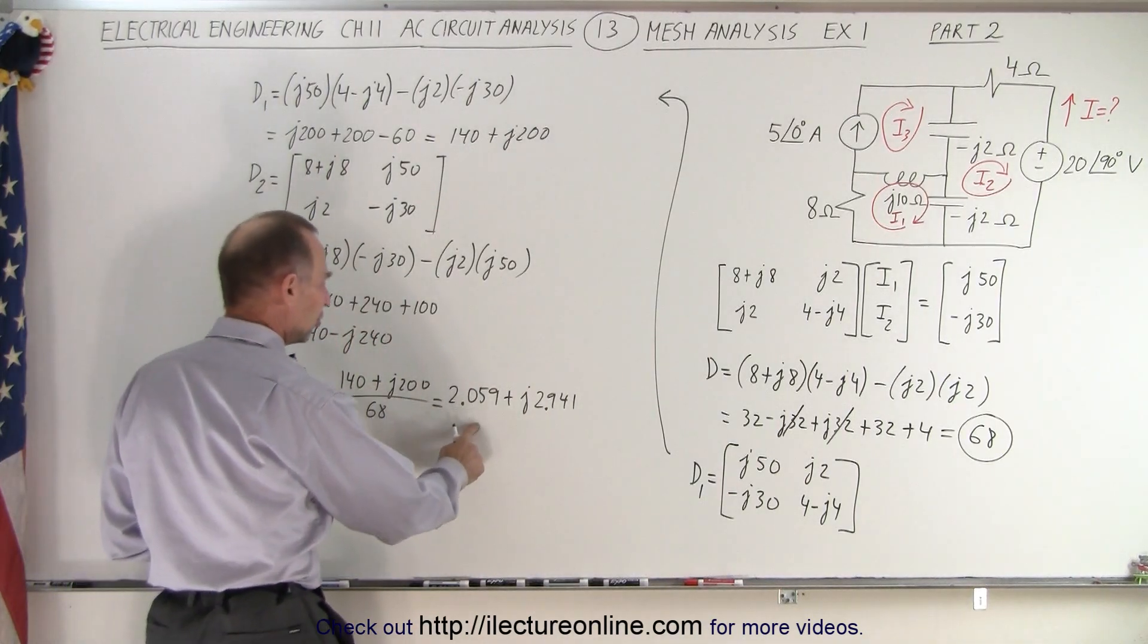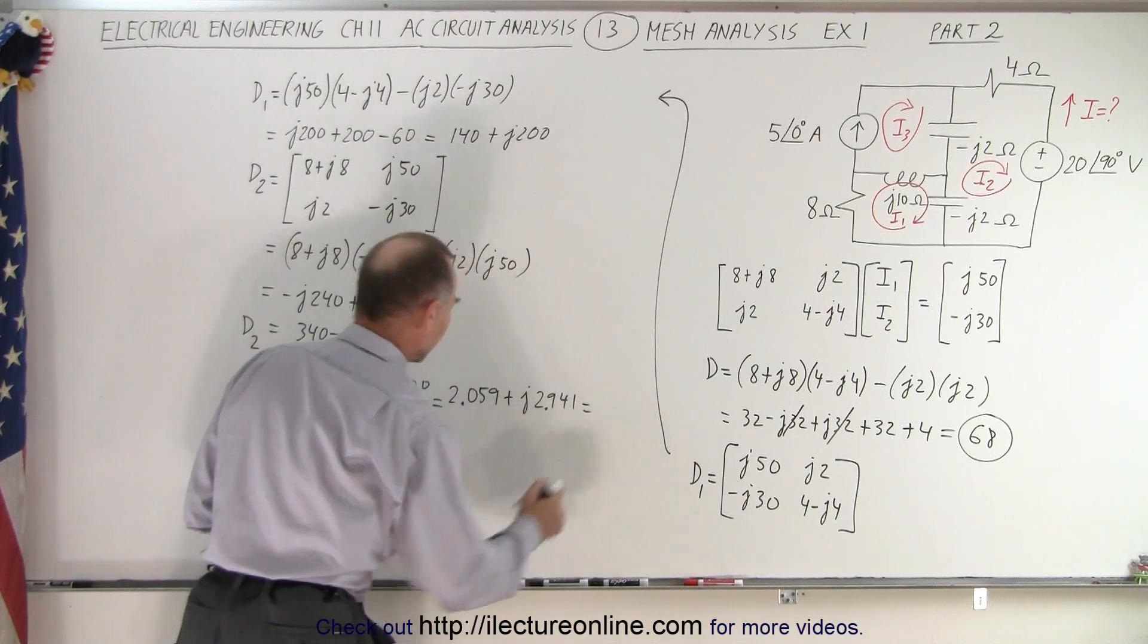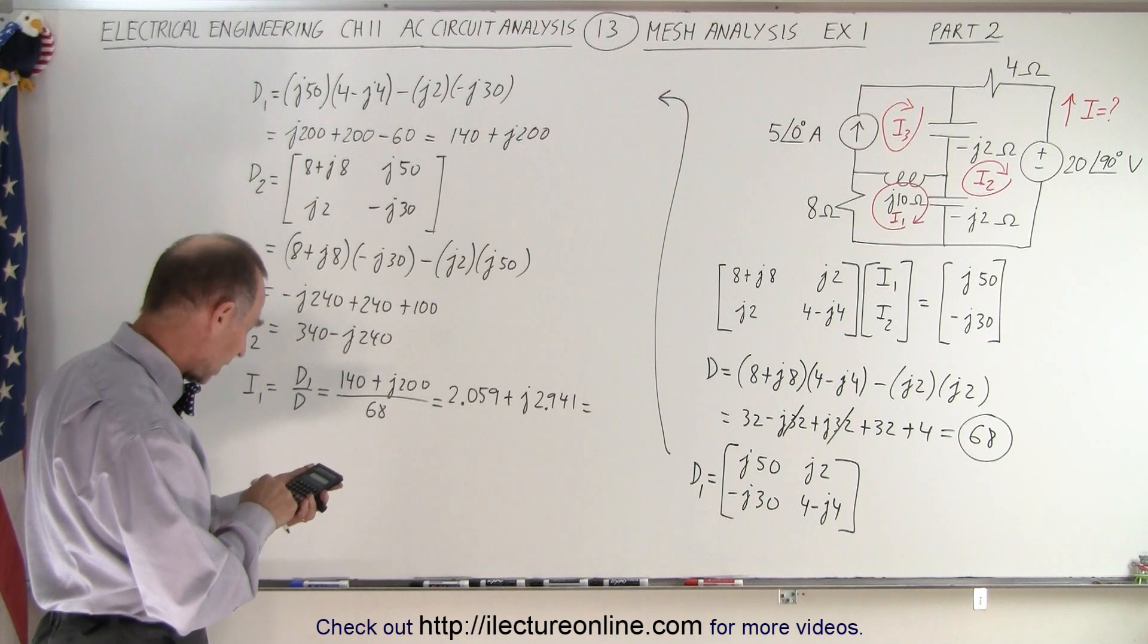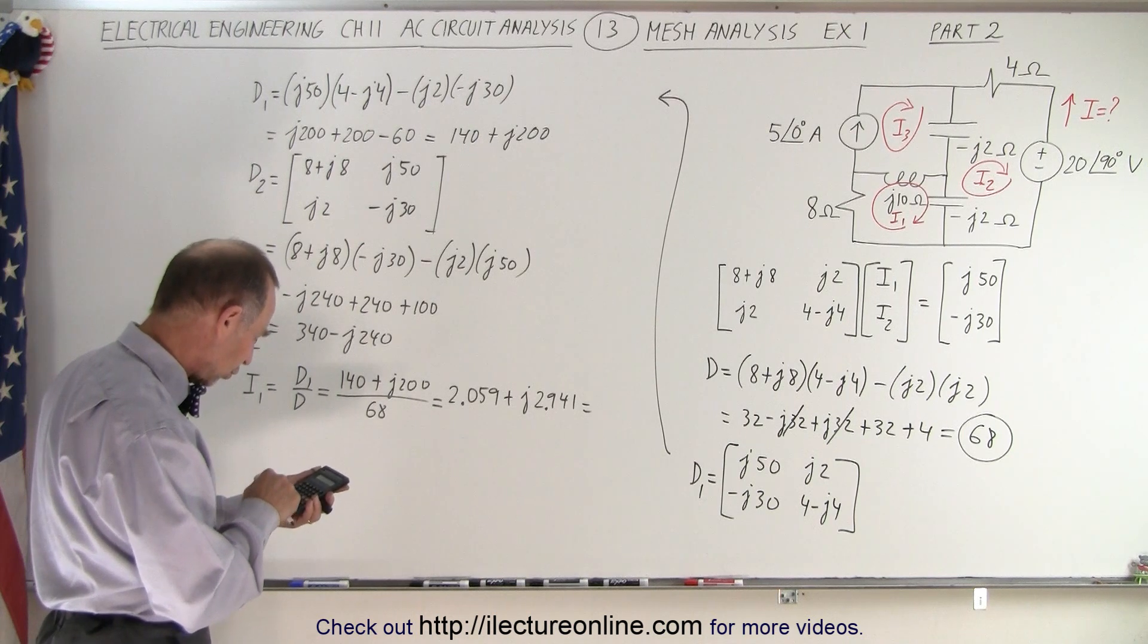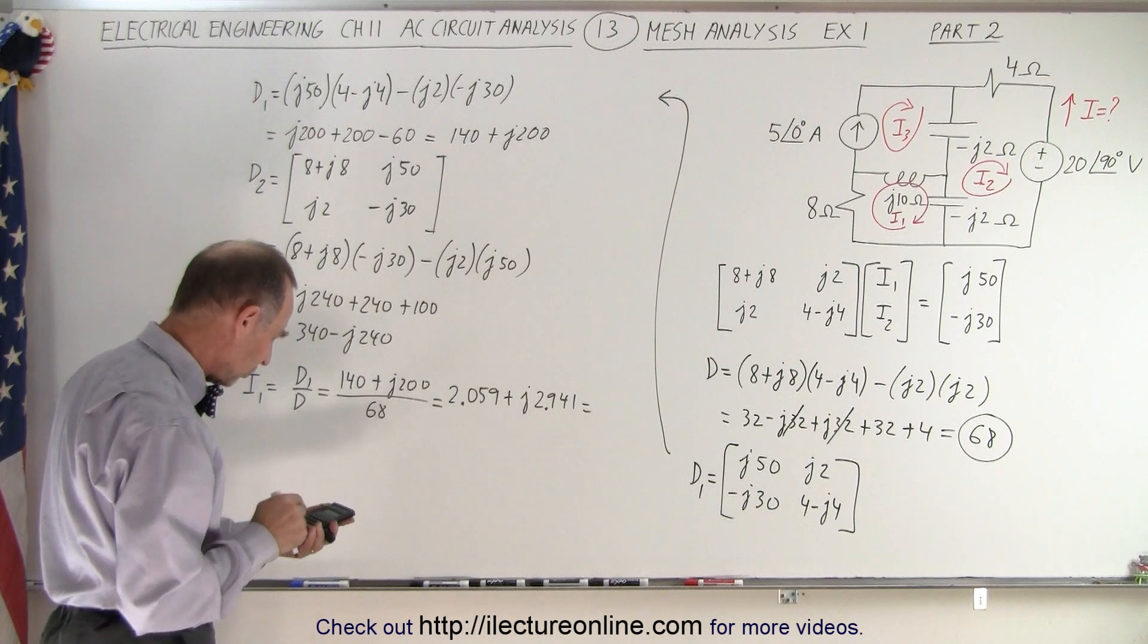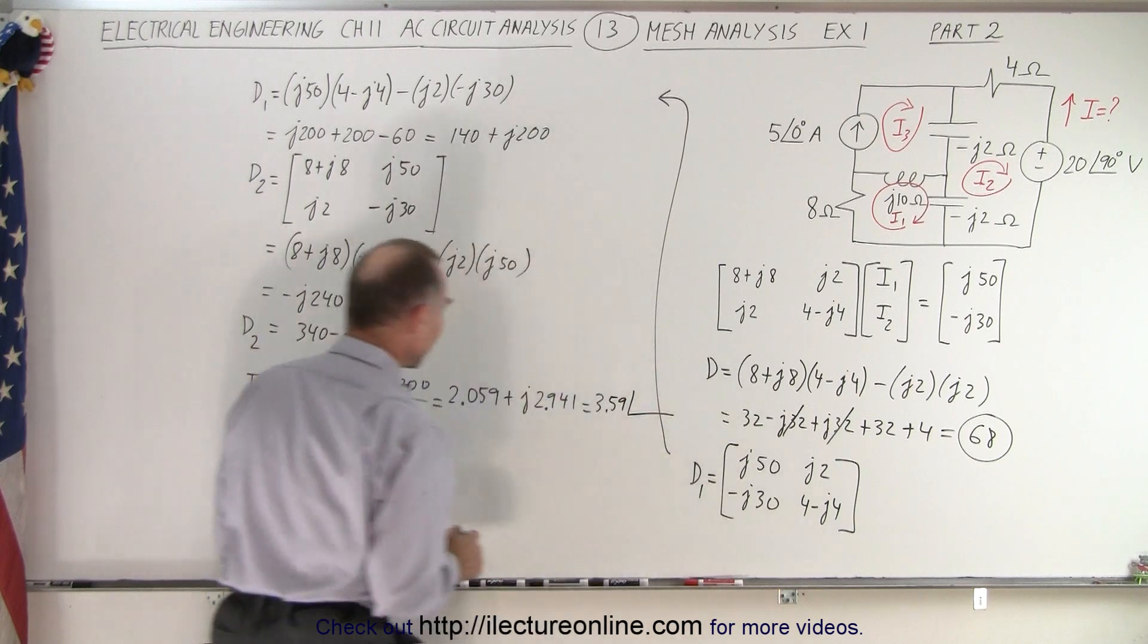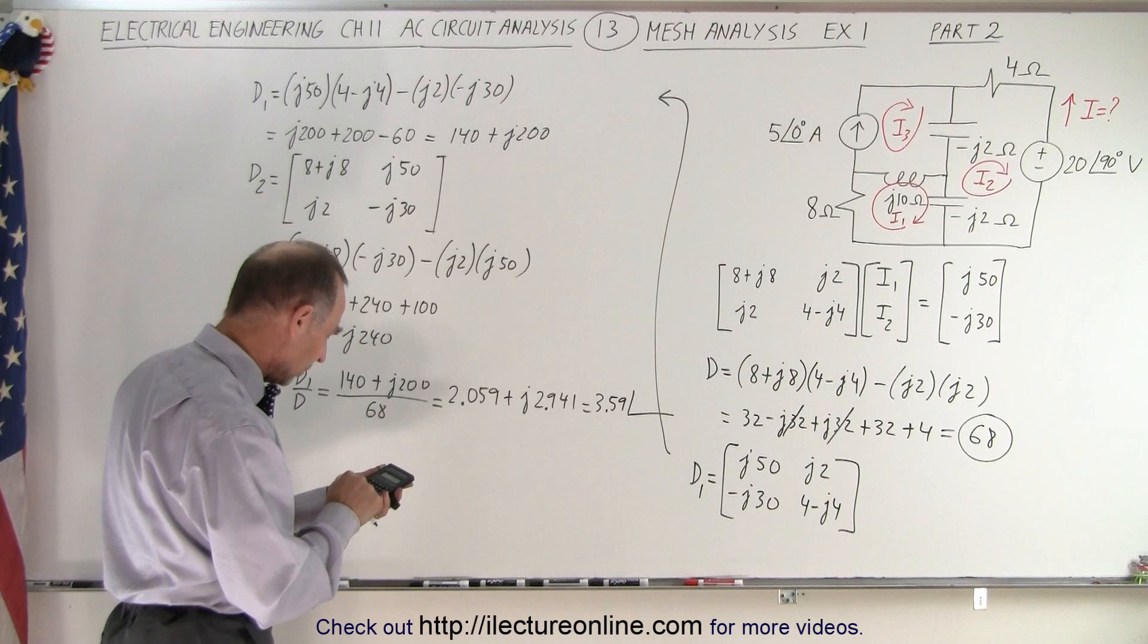So we also can change this into the format of magnitude and phase angle. So let's do that. So the magnitude will be, take this squared plus, let's see here, we take 2.059, we square that, plus 2.941 and we square that, take the square root, and we end up at 3.59.